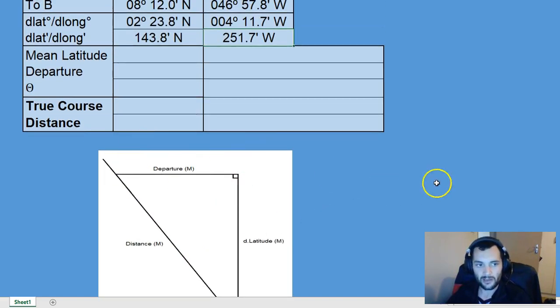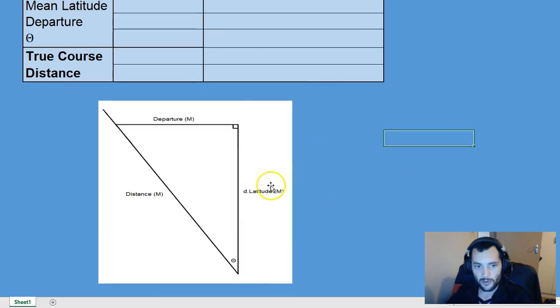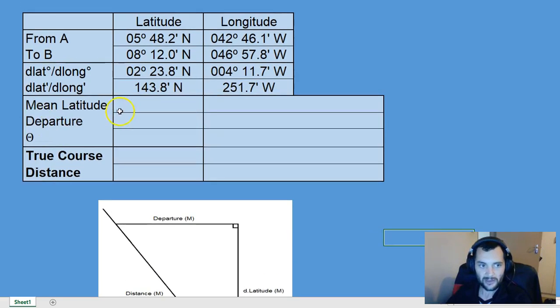How are we going to find departure? First we need to find the latitude that's more or less in the middle between A and B. Our mean latitude must be somewhere in the center here, our average latitude. That is what we are going to find.